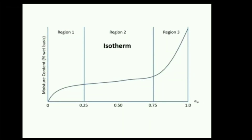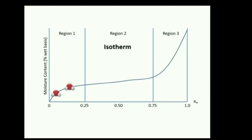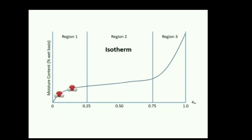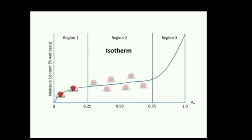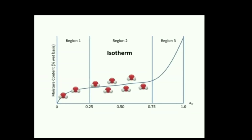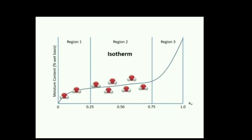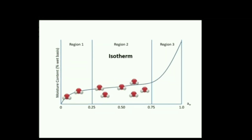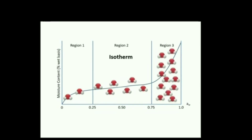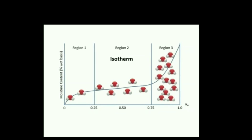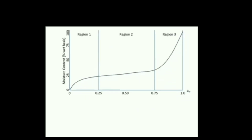Foods with low water activity have their water molecules tightly bound to the food and not easily available for microbial growth. Foods with intermediate water activity have relatively low moisture but have considerable mobility of water molecules, whereas foods with high water activity tend to have water molecules with high mobility, making water easily available for microbial growth.